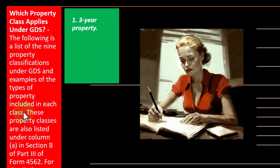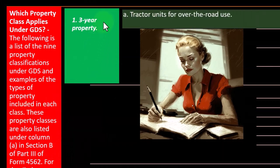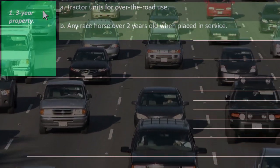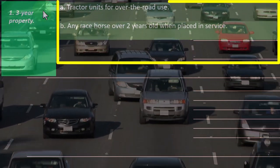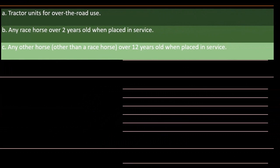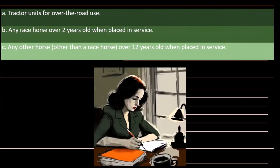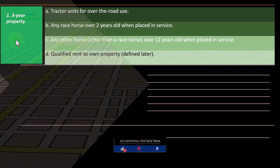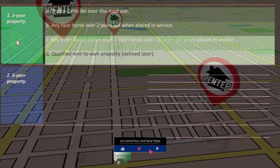First, you have three-year property. Three-year property includes: (a) tractor units for over-the-road use, (b) any racehorse over two years old when placed in service, (c) any other horse other than a racehorse over 12 years old when placed in service, and qualified rent-to-own property, defined later.